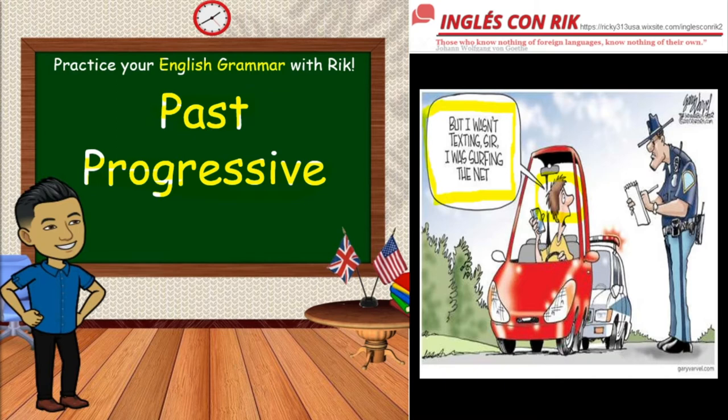The driver is giving his version of what he was doing when he was stopped by the police officer. Past progressive puts emphasis on the course of an action in the past.